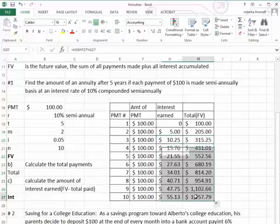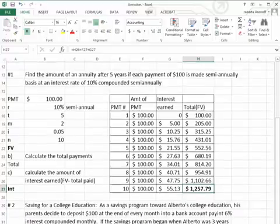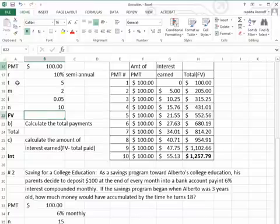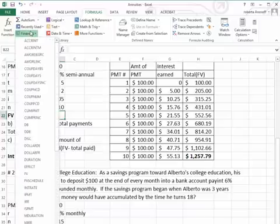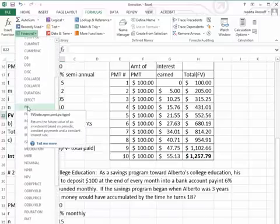And you will notice that we have $1,257.79 in the account. Well, let's see how this works with the formula. In order to get the future value, we go to Formulas. We go to the Financial Book. And we go down until we get the future value, FV.